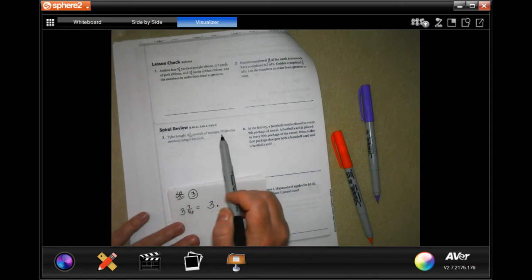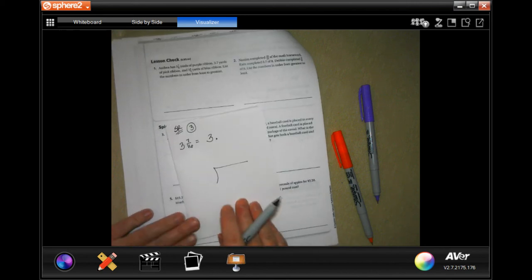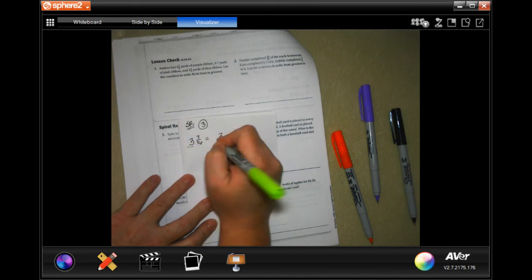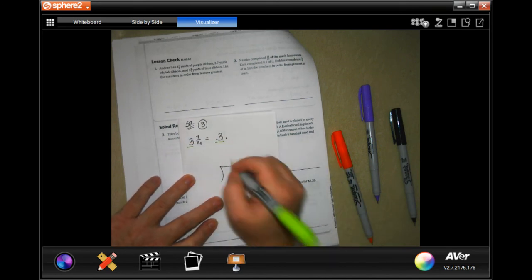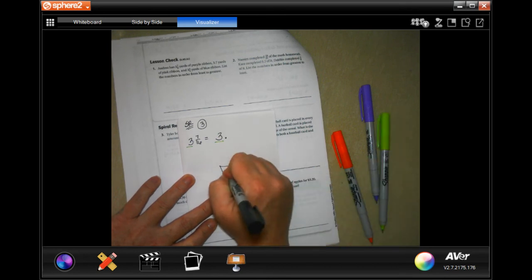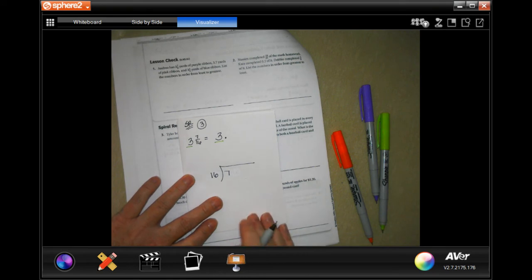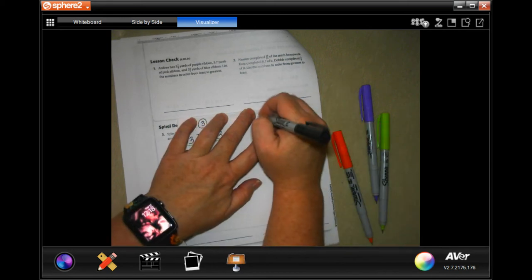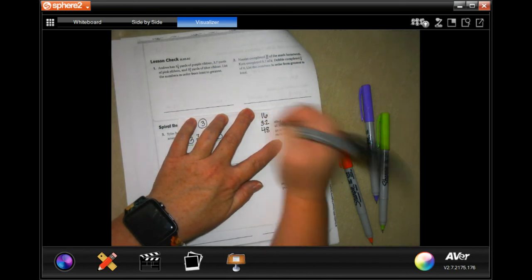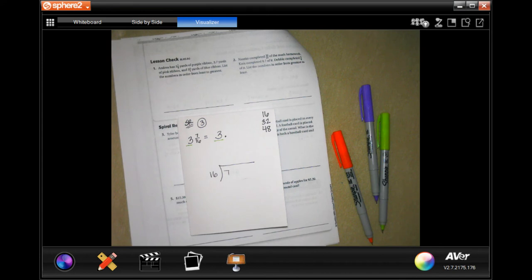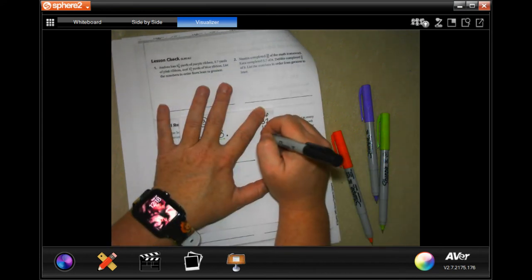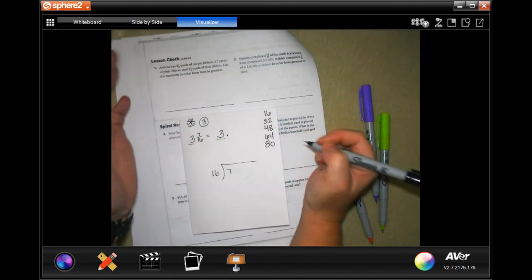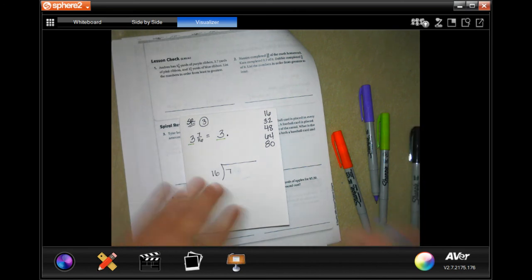Spiral review number three says, Tyler bought 3 and 7/16ths of a pound of oranges. Write this amount using a decimal. So, I've already written the three because that doesn't change. Now, in order to write the decimal, we need to put the seven in the box and the 16 out of the box. I don't know my multiples of 16 off the top of my head. So, I'm going to go ahead and use my calculator just to get the multiples of 16. So, I know that we have 16, 32, 48, and then I got to start using some math here. 64, that would be 80. Let's start there and see if we have to add any more.